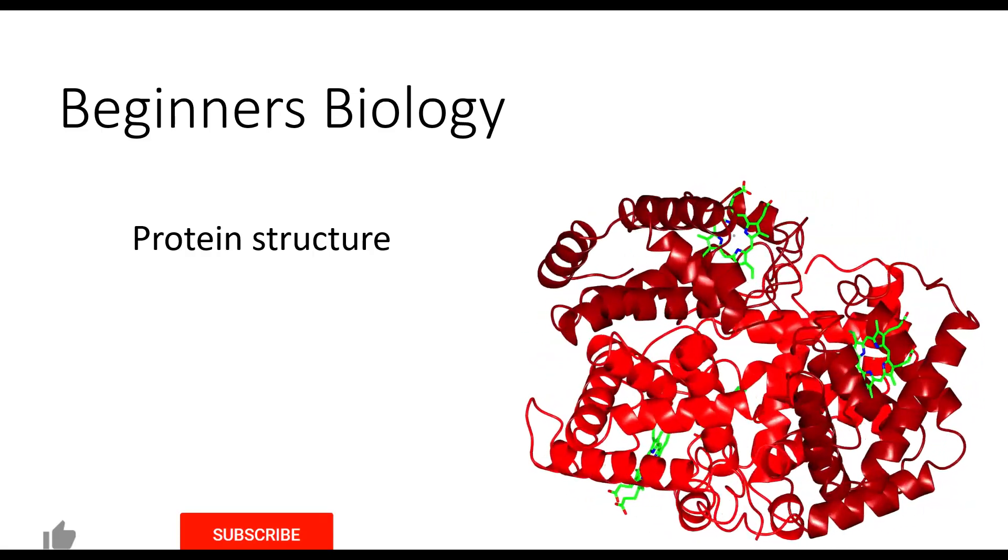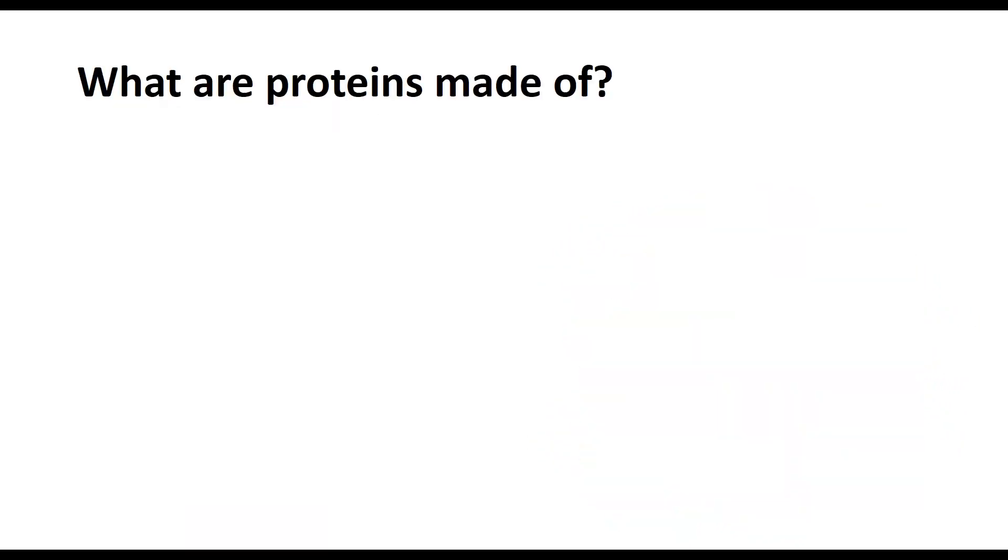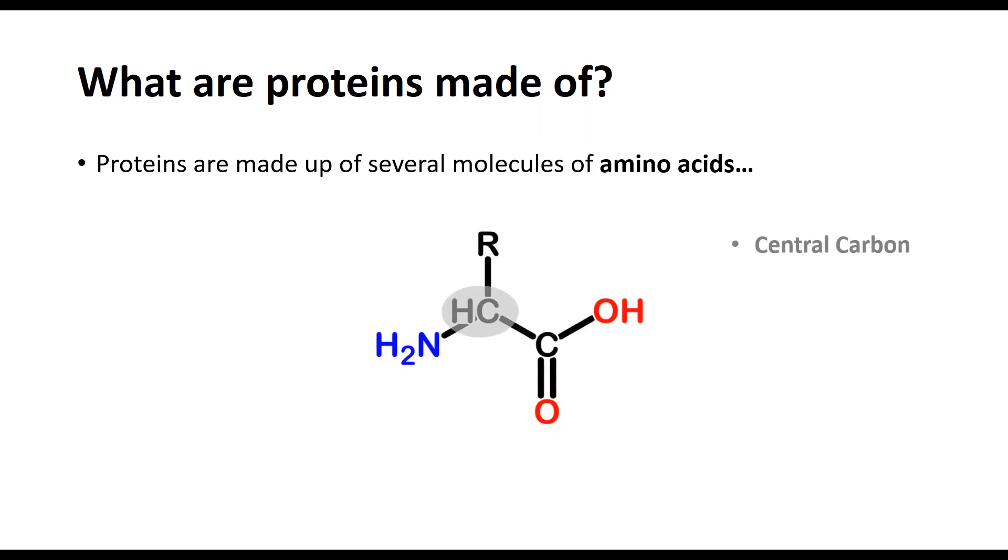Before looking in detail at how proteins are structured in general, I want to go over the molecules that proteins are made from, which are called amino acids. These molecules revolve around the central carbon atom that has four different groups of atoms attached to it, with the important ones being an amine group in blue, a carboxylic acid group in red, and a variable side chain group, presented here by the letter R, which is highlighted in green.